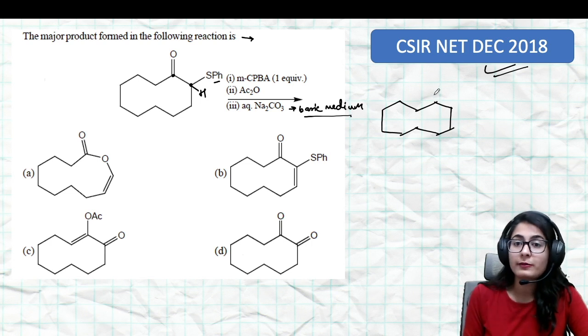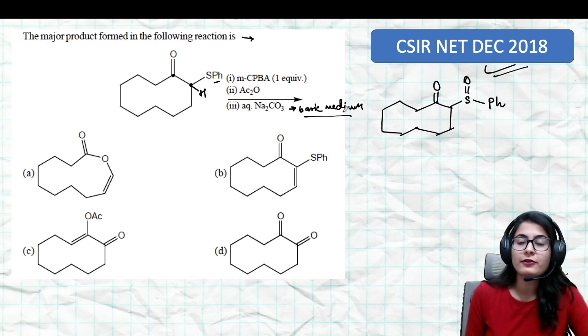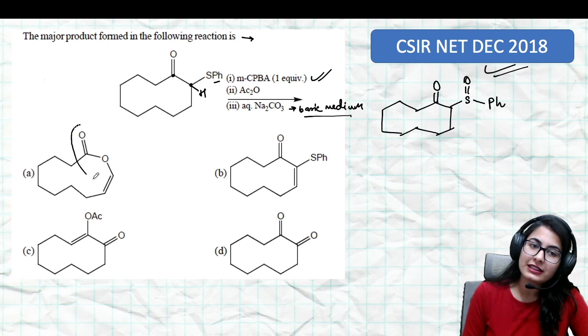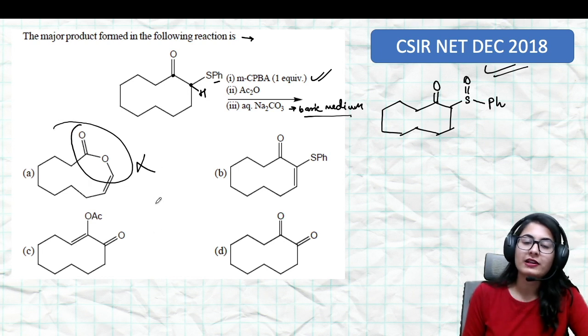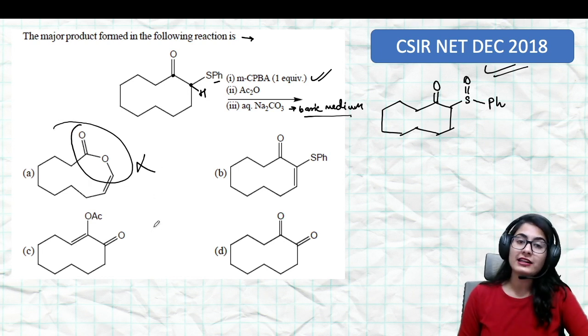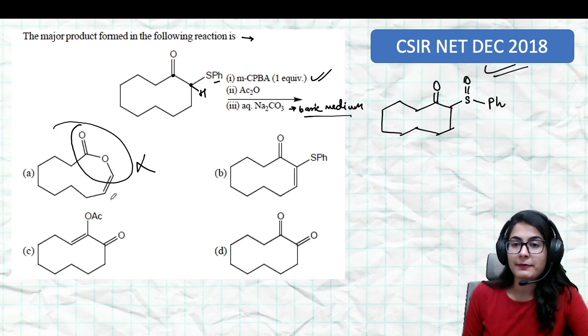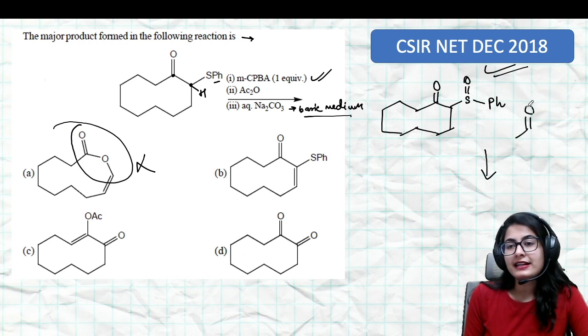First thing: what do you expect from metachloroperbenzoic acid? It will be hetero atom oxidation in the first step. Sulfur gets converted to sulfoxide in the first step. Only one equivalent - you're not getting the Baeyer-Villiger rearrangement, absolutely not when there's a hetero atom present. You will get the sulfoxide.